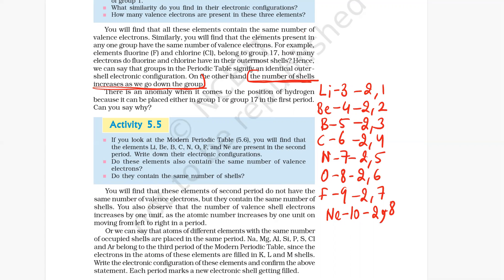Do these elements also contain the same number of valence electrons? Yes, all of them contain two shells, K or L. Okay, so in a particular period, number of shells remain the same.